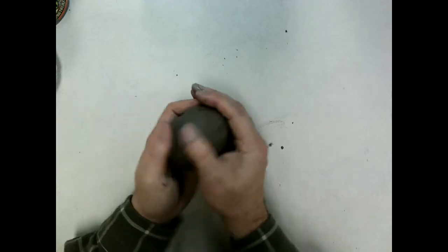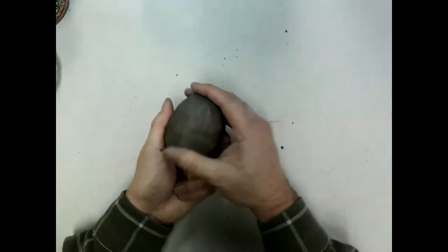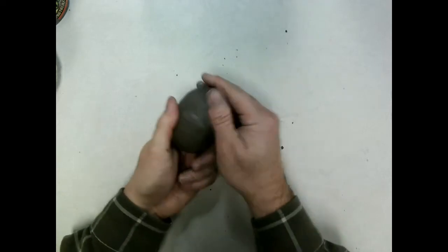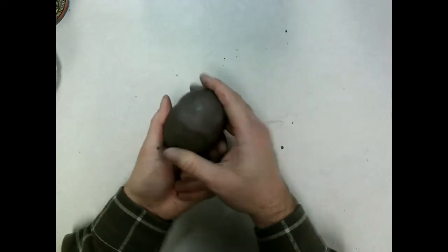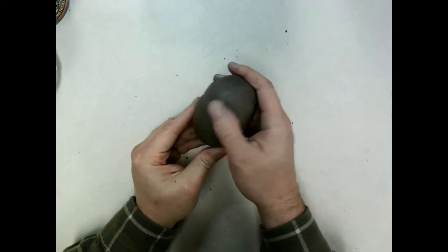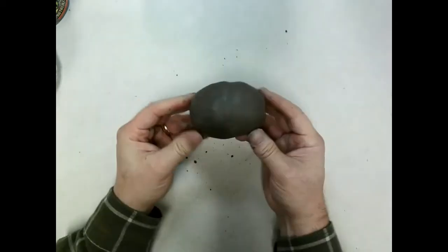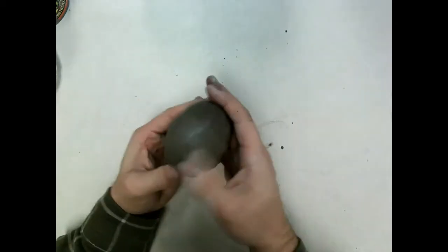Once the whole thing is put together and smoothed out the way that you want it, then you can decide what you're going to do for creating some sort of surface texture. Change the shape if you want. It does not have to be this shape. It could be whatever shape you want it to be.